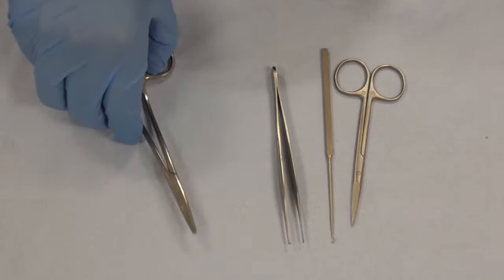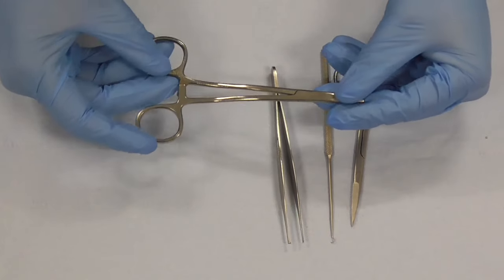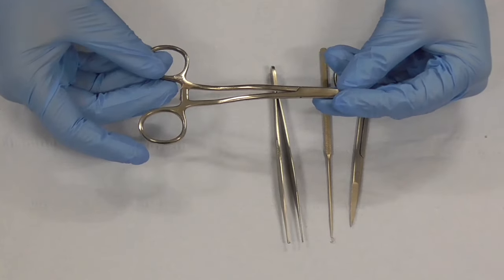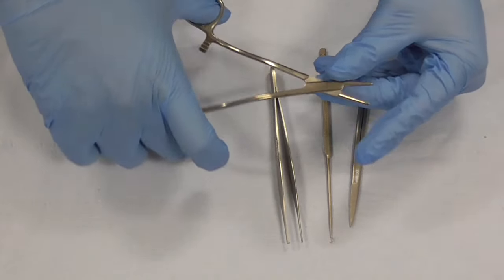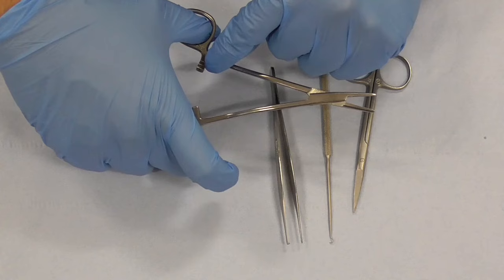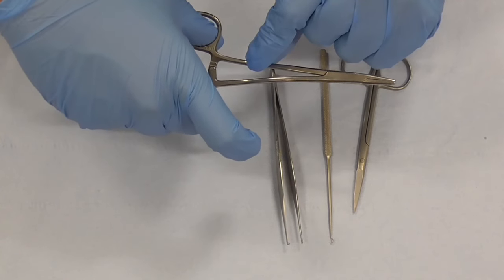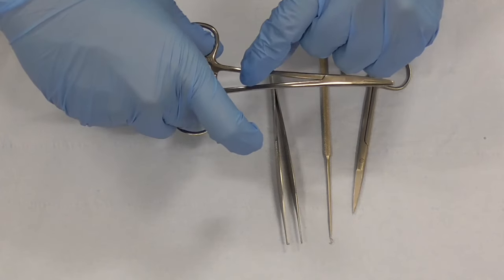The first of course is a needle holder. Now this needle holder is a ratcheted needle holder meaning there's a ratchet mechanism just there and you can see when you close it, it clicks in.